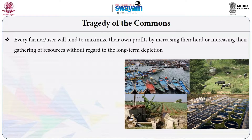The tragedy of the commons is experienced when every farmer or user of a specific resource tends to maximize their own profits by increasing extraction. In case of grazing land, people try to increase the number of animals in their herd. In case of fisheries, people try to catch more fish — all this by maximizing their own profit through extracting more and more resources without regard to the long-term sustainability of that resource.